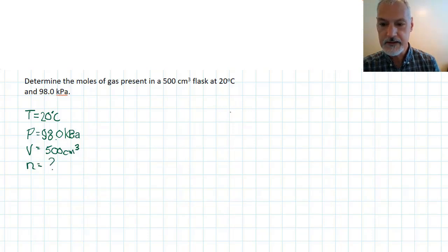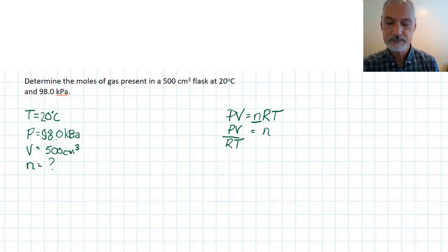Our ideal gas law says that PV is NRT. So, if I want to get N all by itself, I'm going to take the pressure and the volume and divide it by the gas constant and the temperature. Now, prior to putting them in, a little bit of a unit check,